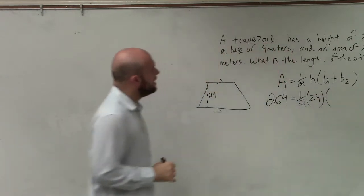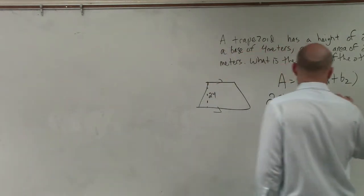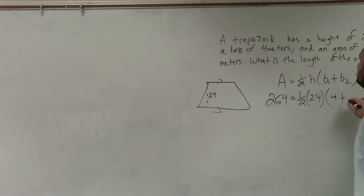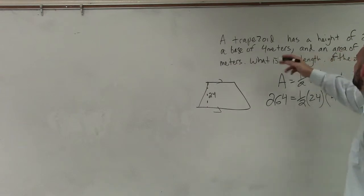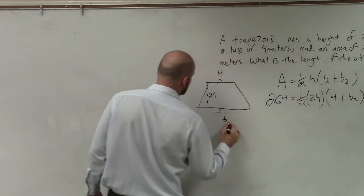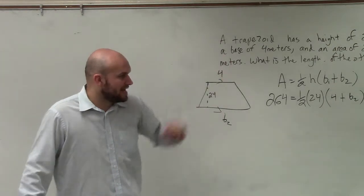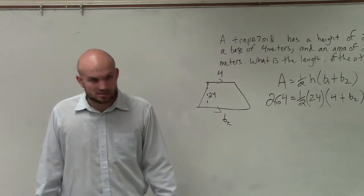And it says one of the bases is 4 meters, so 4 plus B2. You can say like this is 4 and this is B2. You guys see how we have all the information except for the actual length of B2? Does that make sense? Yes.